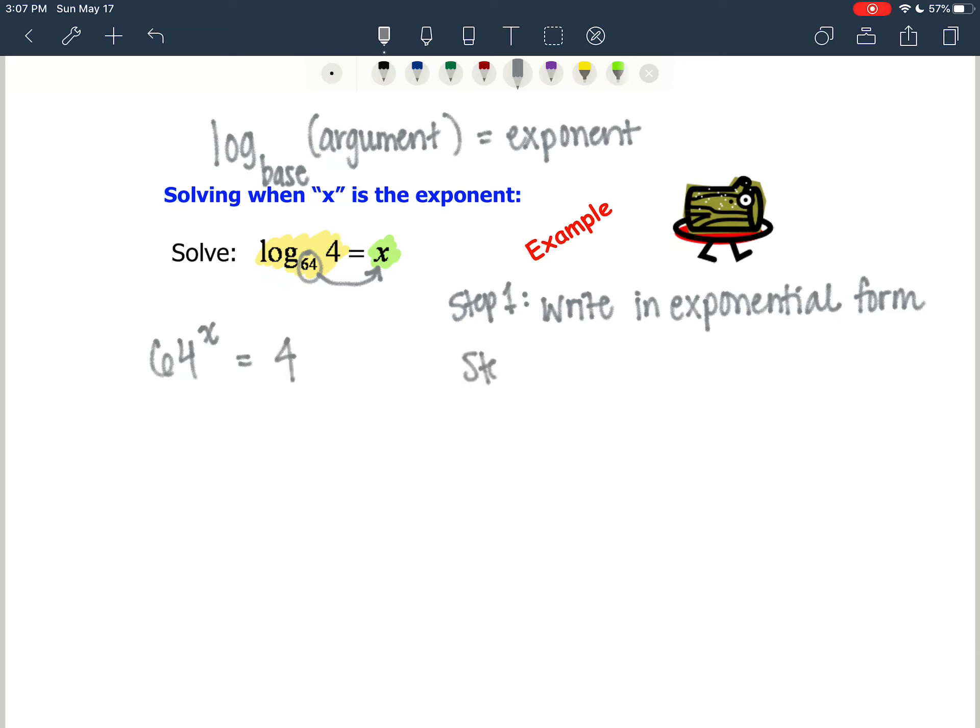Now our next step is to try and get the same base. So do 64 and 4 come from the same base? The answer here is yes, absolutely. And it all comes back to knowing those exponential facts.